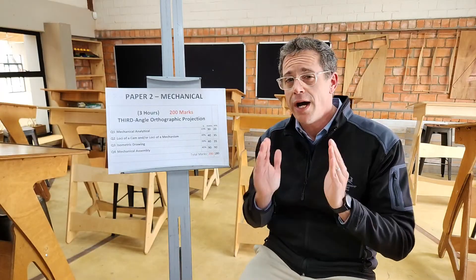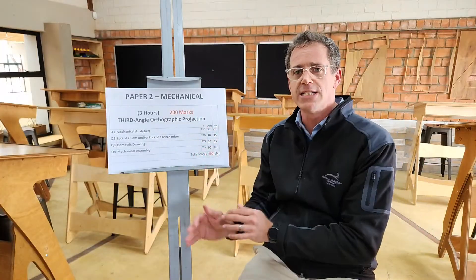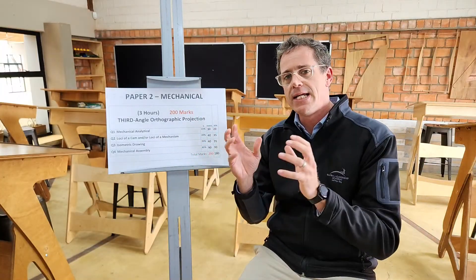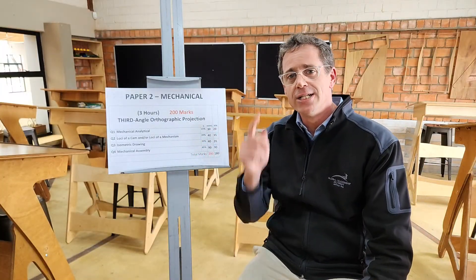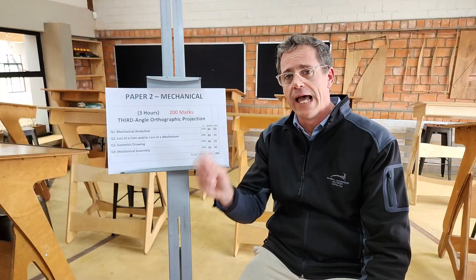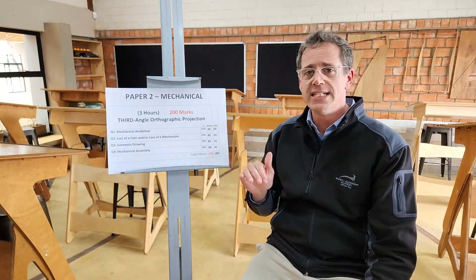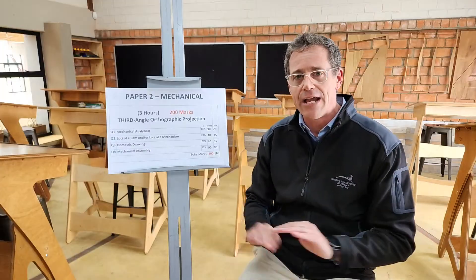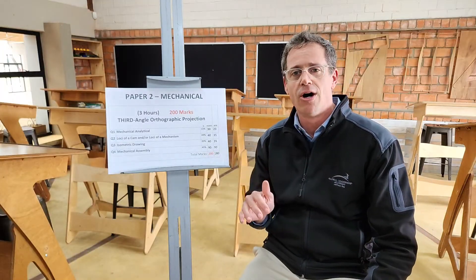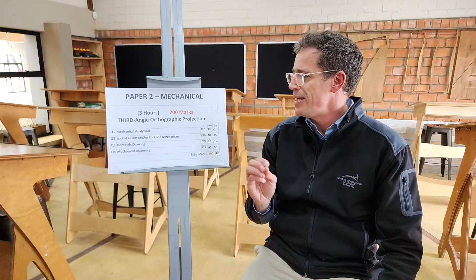Paper Two is a mechanical paper — again three hours, 200 marks — and it is in third angle orthographic projection. All questions on this paper are in third angle, so take note of that. Your first question is going to be a mechanical assembly, guaranteed, roughly about 30 marks. Spend about 20 minutes on it.